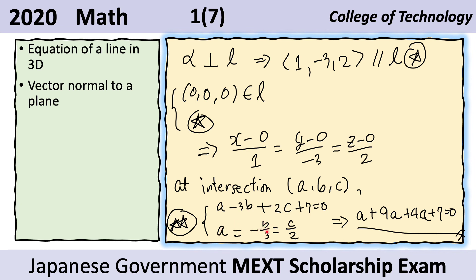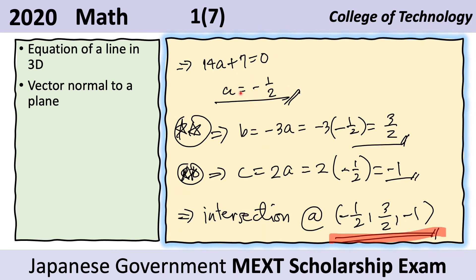To solve for a, b, and c, we substitute using the symmetric form: a equals negative b over 3, so b equals negative 3a, and a equals c over 2, so c equals 2a. Substituting into the plane equation gives a minus 3 times negative 3a plus 2a plus 7 equals 0. Rearranging yields a equals negative one half. Then b equals negative 3a equals three halves, and c equals 2a equals negative 1. Therefore the intersection point is (negative one half, three halves, negative 1).